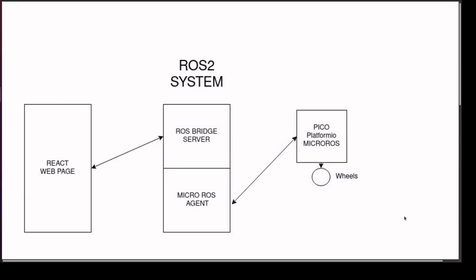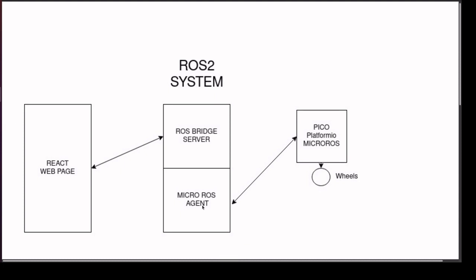Welcome everyone. In this session we will show you how to control a robot from a web page. We have a React.js web page and a ROS bridge server which gets input from the web page and converts it into a ROS2 interface. The micro-ROS agent connects to the microcontroller.